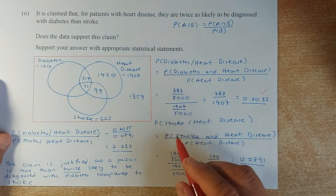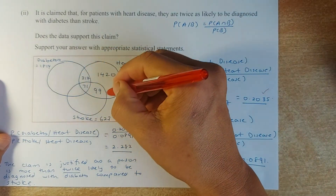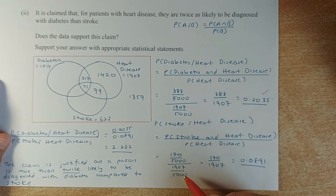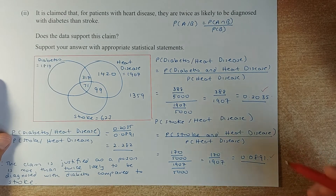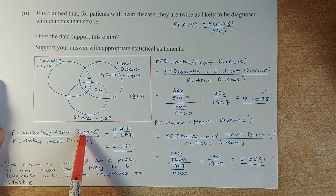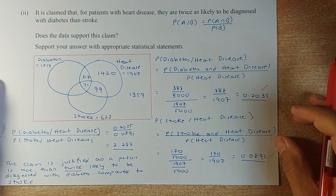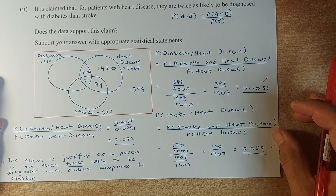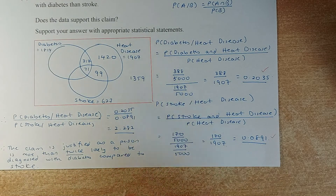Similarly, probability of stroke given heart disease is stroke and heart disease divided by heart disease. So it's 170 out of 5,000 divided by 1,907 over 5,000, which simplifies to 170 over 1,907, giving 0.0891. Dividing 0.2035 by 0.0891 gives 2.282. So the claim is justified — the person is about 2.28 times more likely to be diagnosed with diabetes compared to stroke, which is more than twice.